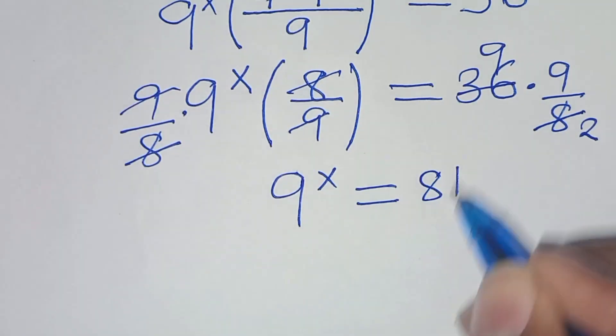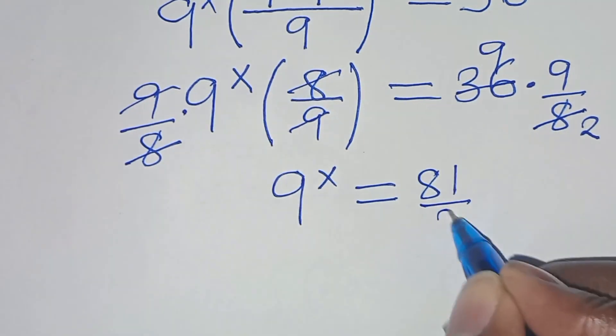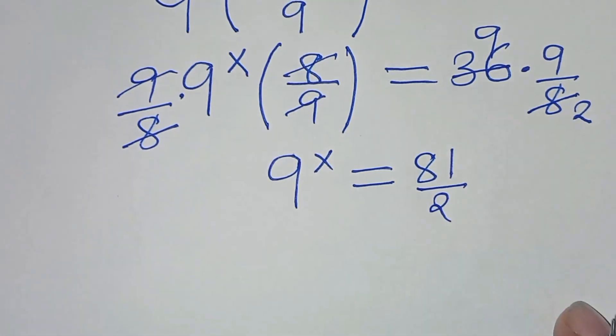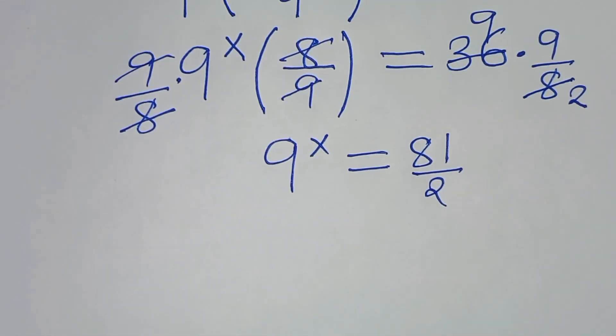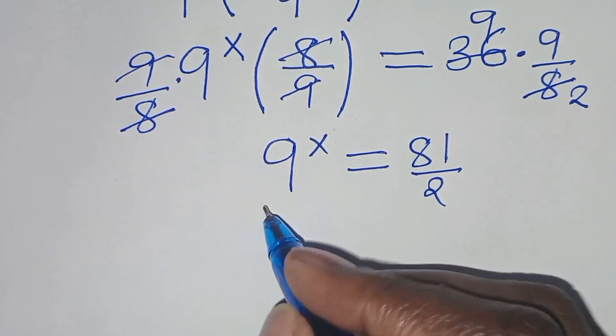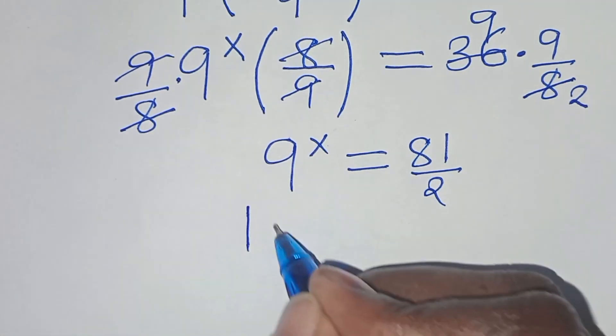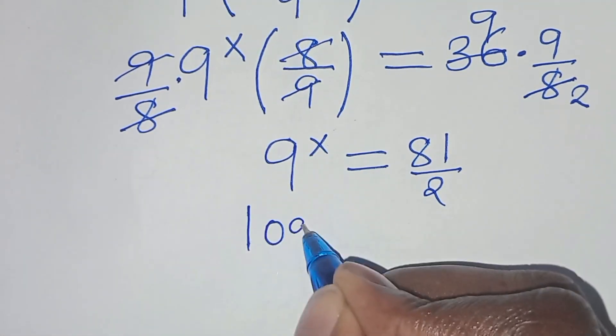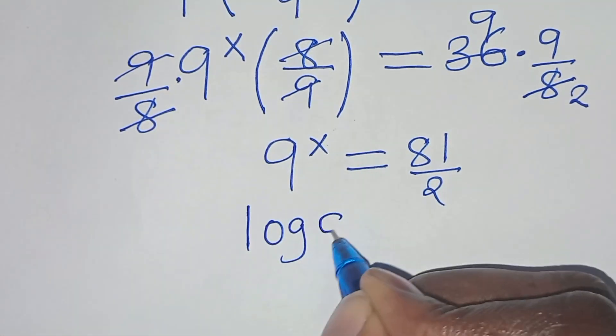So we have 9 to the power of x equals 81 over 2. The next step to solve for x, we introduce log of both sides: log(9^x) equals log(81/2).